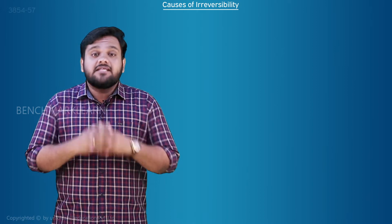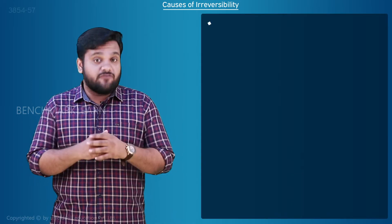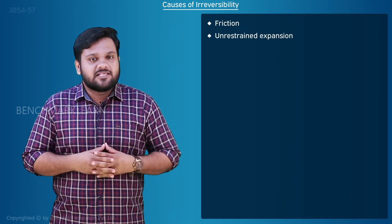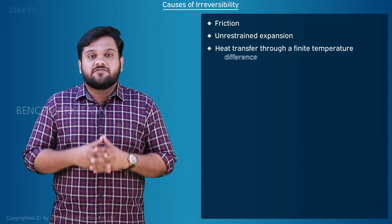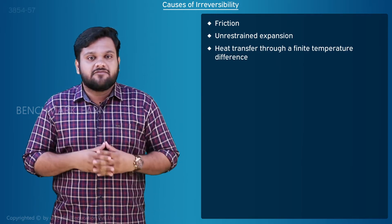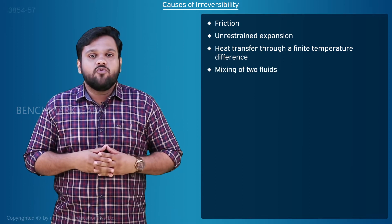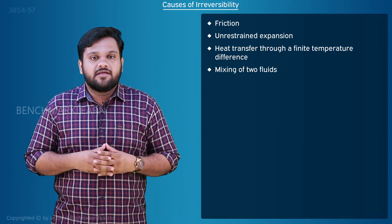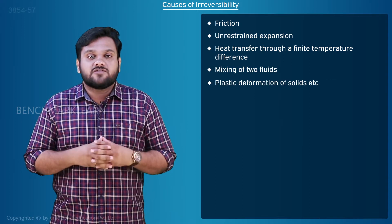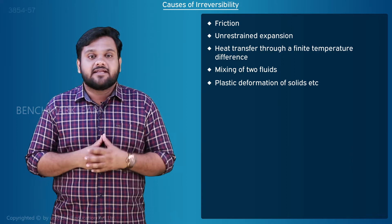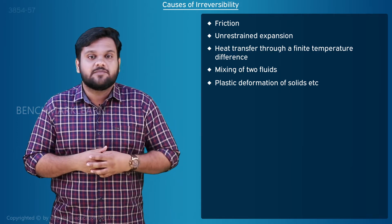Causes of Irreversibility. Irreversible processes are undesirable but they always happen around us. So what is the reason for this irreversibility? Friction, unrestrained expansion, heat transfer through a finite temperature difference, mixing of two fluids, plastic deformation of solids, etc. can be stated as the causes for irreversibility.